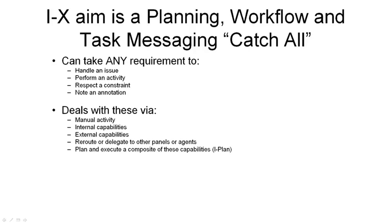It can deal with these via manual activity — so you can basically just tick items off on a checklist, which is a perfectly good way of representing that you've performed an activity in some systems. But also via inbuilt internal capabilities in the system, via external capabilities you know about, or by rerouting or delegating to other panels and agents, which is where communication and collaboration and the models of those other agents comes in. Or we can plan and execute a composite of these capabilities, using the planner inside the system itself to plan that kind of workflow.